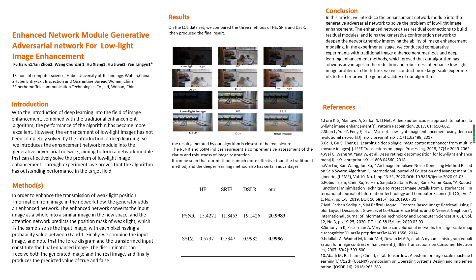The next part is the method. In order to enhance the transmission of weak light precision information from the image in the network flow, the generator is an enhanced network. The enhanced network converts the input image as a whole into a similar image in a new space. The attention network predicts the precision mask of weak light, which is the same size as the input image, with each pixel having a probability value between zero and one. Finally, we combine the input image and the transformed input to constitute the final enhanced image. The discriminator can receive both the generated image and the real image, and produces the predicted value of true and false.